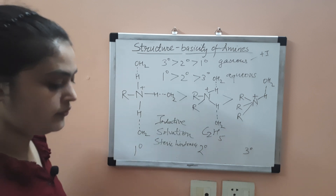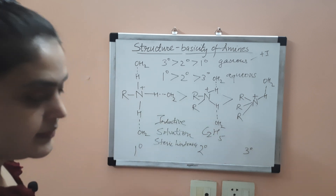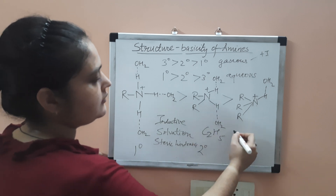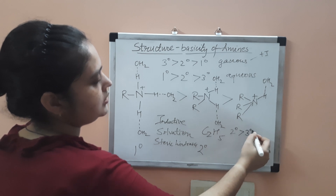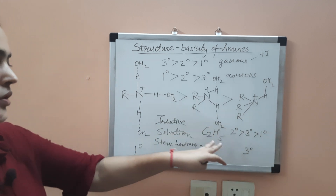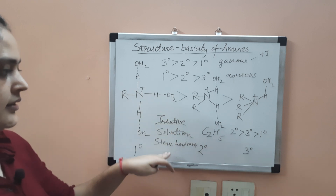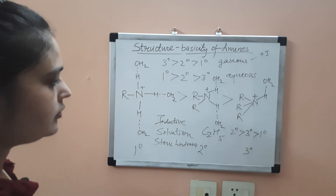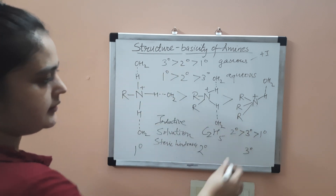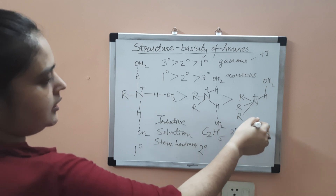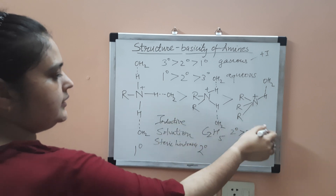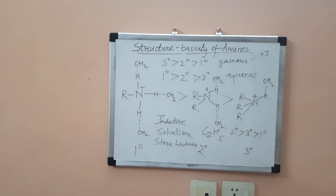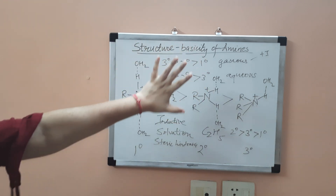In the case of C₂H₅ (ethyl) amines, the order of basicity is: secondary > tertiary > primary. This is because all three factors — inductive effect, solvation, and steric hindrance — are operating together. Secondary is highest, then tertiary due to steric hindrance, and primary is the least basic.